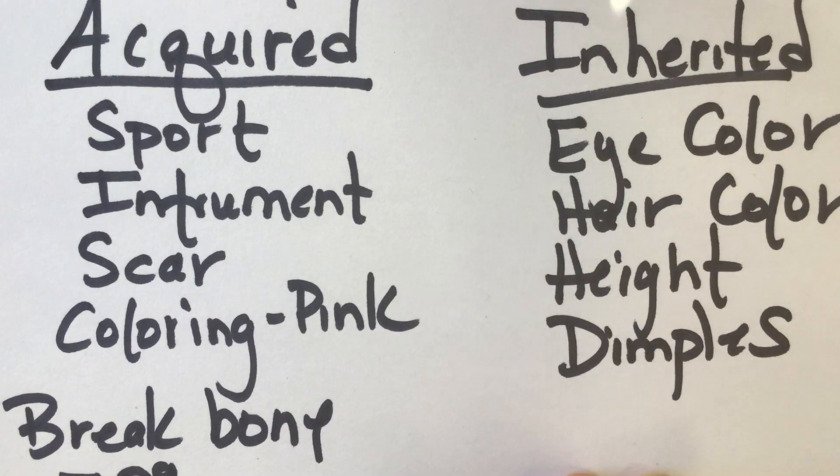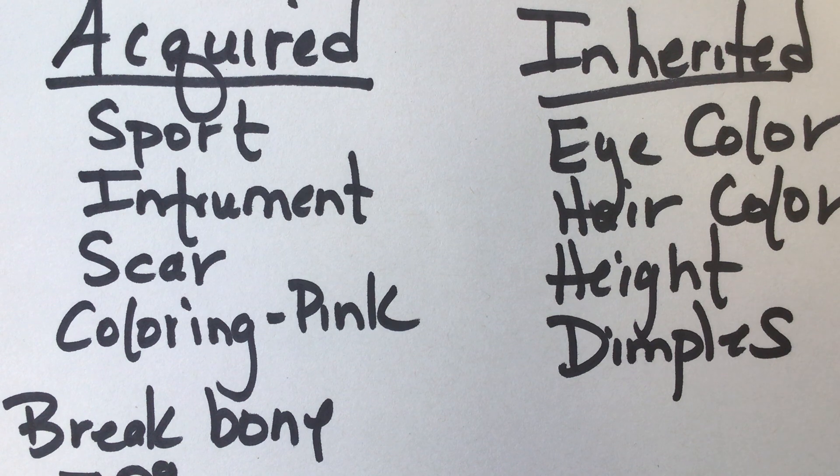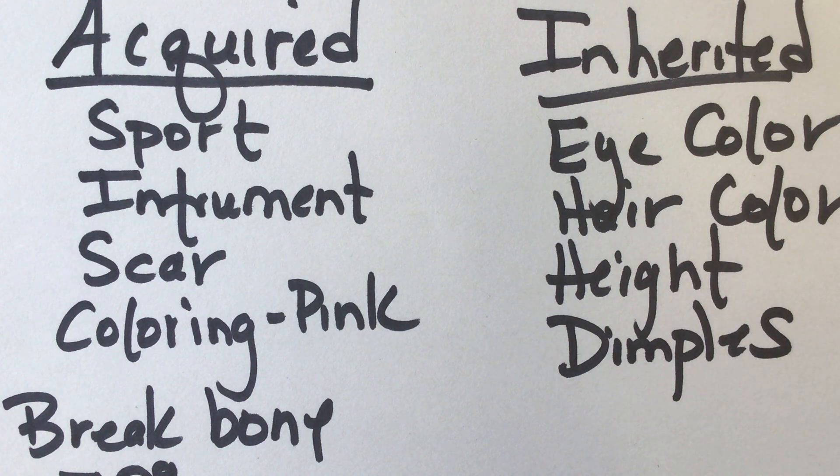So let's say that you get really good at soccer. You can't pass on that acquired trait to your offspring. Now, if you have brown eyes, you are going to pass on that trait to your offspring.